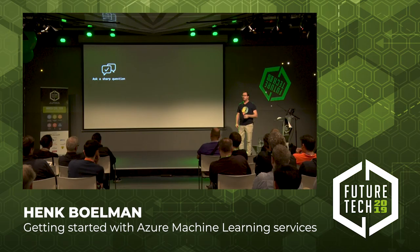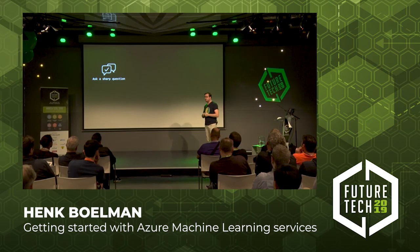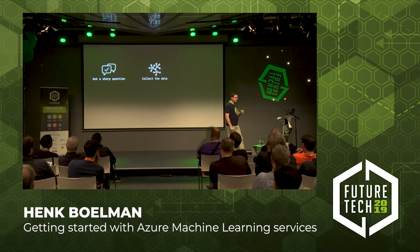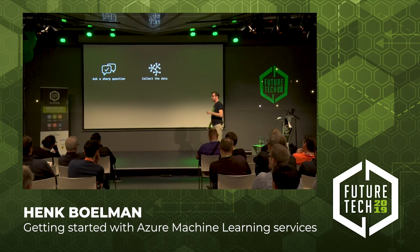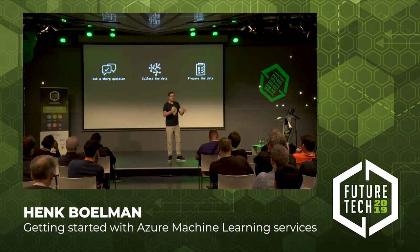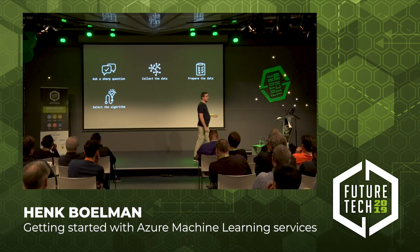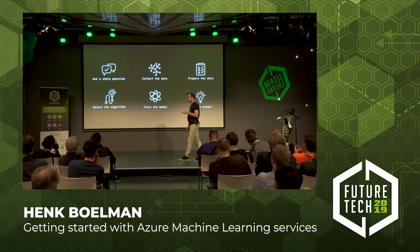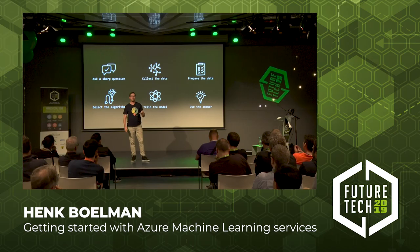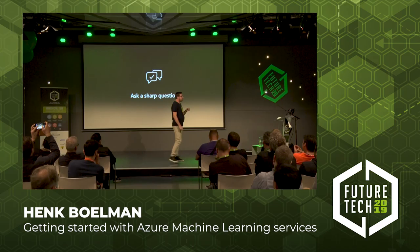First, let's have a look at what the data science process actually is. First, you have to ask a sharp question, because machine learning can answer questions — so think of a good one. You have to collect data, and that mostly takes around 80% of the time, because getting data from a company always takes a while. Then you have to prepare your data — clean it up and make it ready for your machine learning algorithm. Then select which algorithm you're going to use, actually train the model, and then put it in production. That is something lots of people forget.